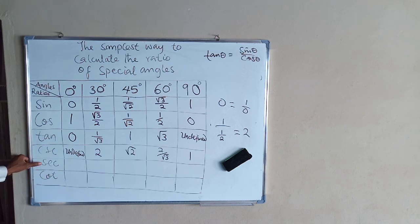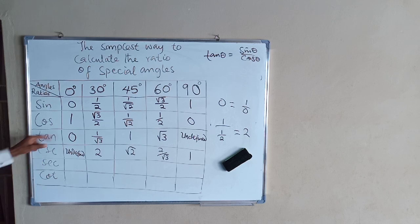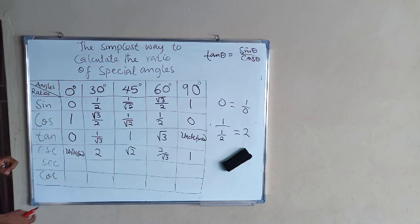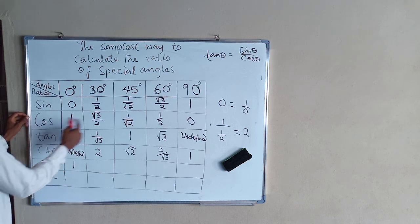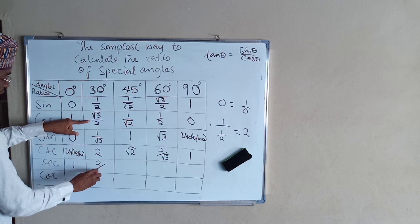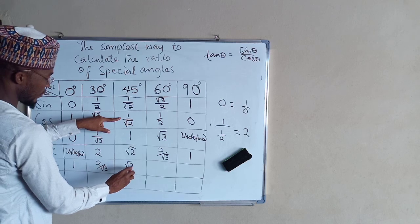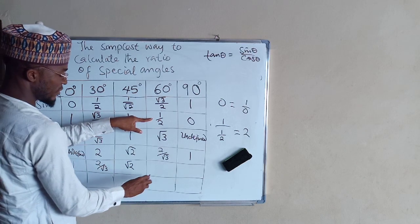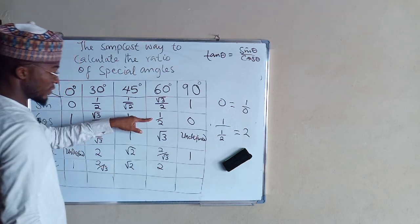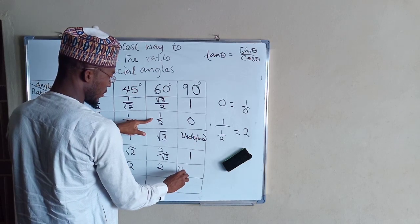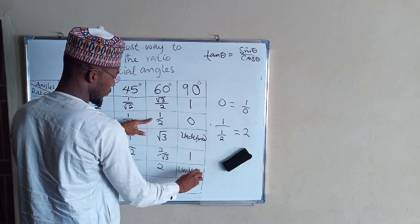For sec, sec of these angles is the reciprocal of cosine. So sec 0: 1 divided by 1 is 1. Sec 30: the reciprocal of root 3 over 2 is 2 divided by root 3. Sec 45: the reciprocal of 1 over root 2 is root 2. Sec 60: the reciprocal of 1 over 2 is 2. Sec 90: the reciprocal of 0 is 1 divided by 0, which is undefined.